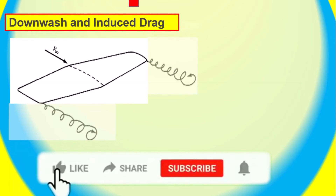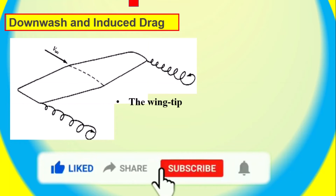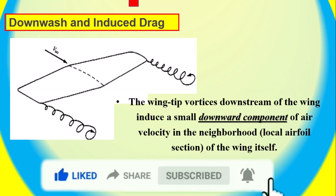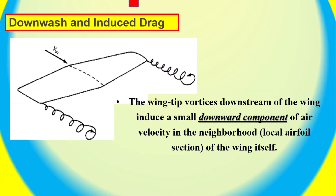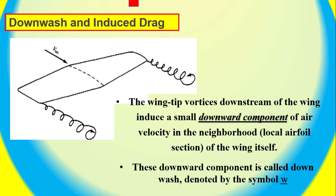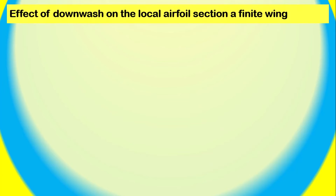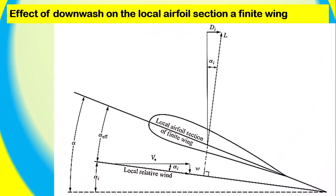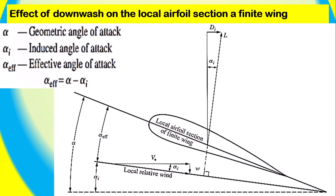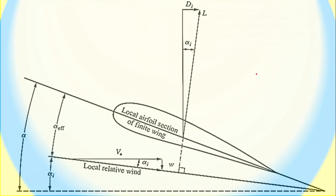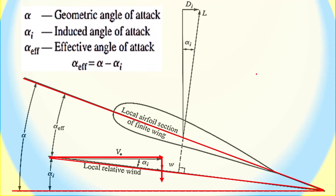The wingtip vortices downstream of the wing induce a small downward component of air velocity in the neighborhood of the local airfoil section of the wing itself. This downward component is called downwash, denoted by the symbol W. An airplane's wing generates lift that creates a swirling pattern of air behind it. Downwash causes a rearward force on the wing known as induced drag. Examining the figure closely, the angle between the chord line and the direction of free stream velocity V∞ is the angle of attack alpha, more precisely defined as the geometric angle of attack.